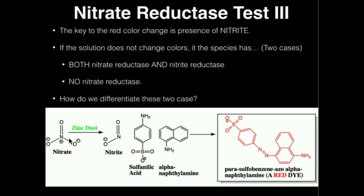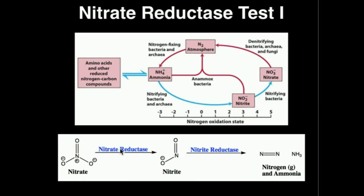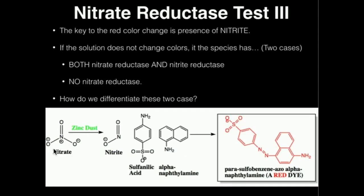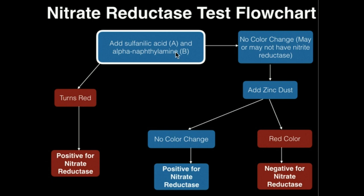Recall that the key to the red color change initially is the presence of nitrite. However, if the solution does not change colors, it could either have both nitrate reductase and nitrite reductase, or it has neither of those enzymes — meaning no nitrate reductase. How do we differentiate between the two cases? We add powdered zinc or zinc dust, and the zinc is actually able to react with residual nitrate. Why would we have residual nitrate? Well, if we had residual nitrate, that means we didn't have nitrate reductase, because if we had that enzyme, it would have been converted to something else. But if we do have nitrate, the zinc will react with the nitrate to produce nitrite, and then the nitrite will react with the sulfanilic acid and alpha-naphthylamine, and we'll see that red dye — a red color change. So if we initially see no color change after we add the sulfanilic acid and alpha-naphthylamine, we can then add zinc dust. If we see a red color, that red color means the zinc reacted with nitrate that was still present, meaning that bacteria does not have nitrate reductase. A red result in this case is negative for nitrate reductase. Be sure you can follow this flowchart.